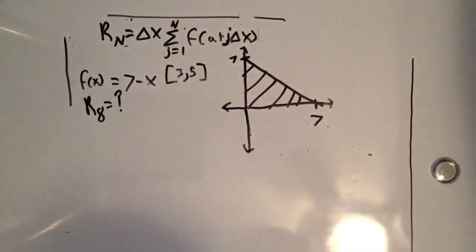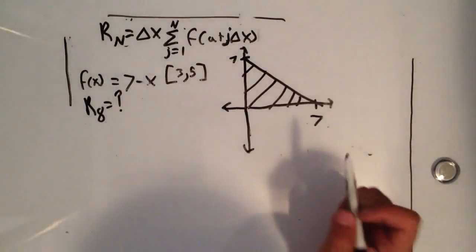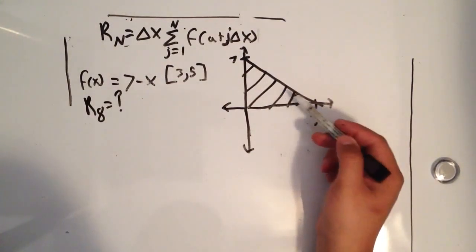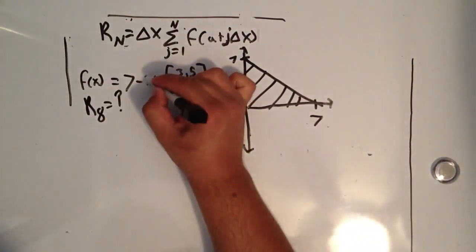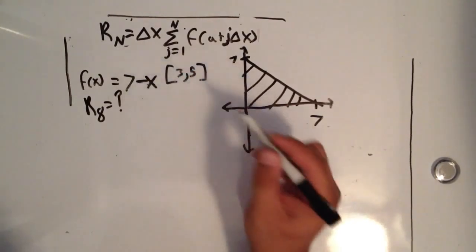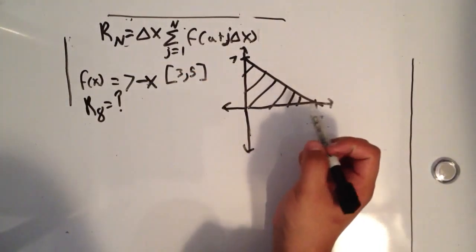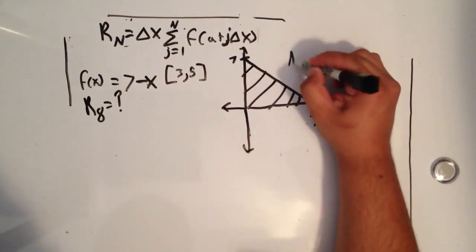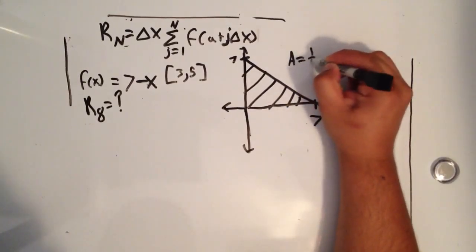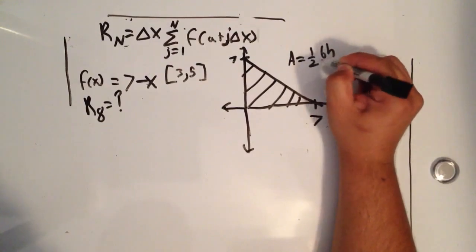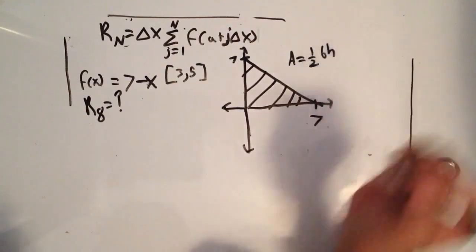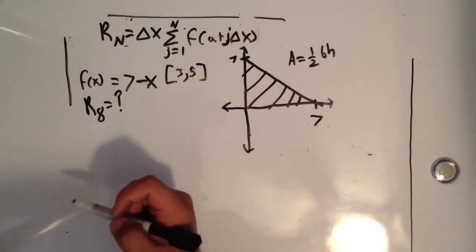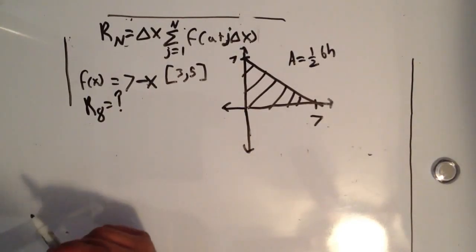In this video we're going to be using Riemann sums to calculate the area under the graph of 7 minus x. Technically we could use the area of a triangle formula — one half base times height — but we'll be doing it the long and hard way using Riemann sums.